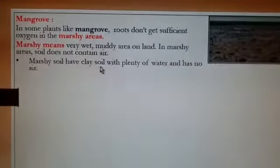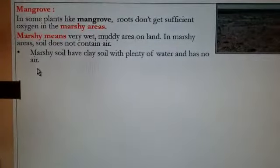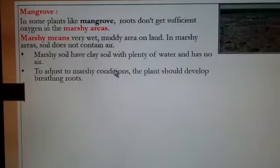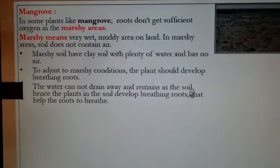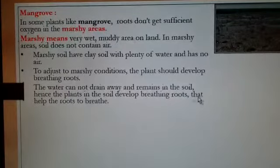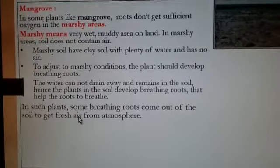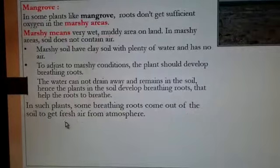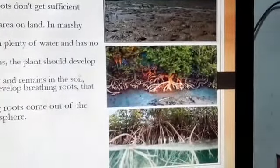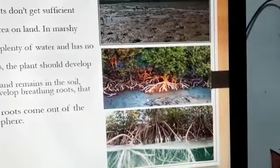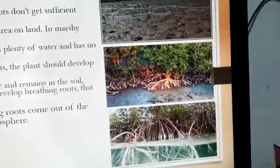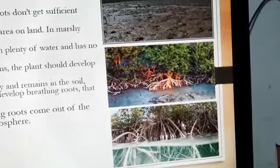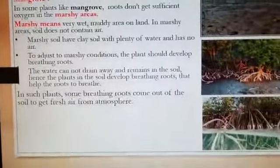Marshy soil has clay soil with plenty of water and no air. To adjust to these marshy conditions, plants develop breathing roots. The water cannot drain away and remains in the soil, so plants develop breathing roots that help the roots to breathe. Some breathing roots come out of the soil to get fresh air from the atmosphere. As you can see in the picture, mangrove plants grow in marshy wet and muddy areas where soil does not contain air. The roots come out of the soil and take in fresh air from the atmosphere. These roots are called aerial roots.